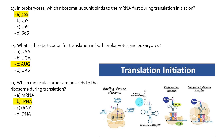Now moving towards translation, where proteins are synthesized. In prokaryotes, which ribosomal subunit binds to the mRNA first during translation initiation? The 30S subunit binds first. What is the start codon for translation? The start codon is AUG on the mRNA, and the anticodon on the tRNA is UAC. Don't confuse codon and anticodon — the anticodon is on tRNA and the codon is on mRNA.